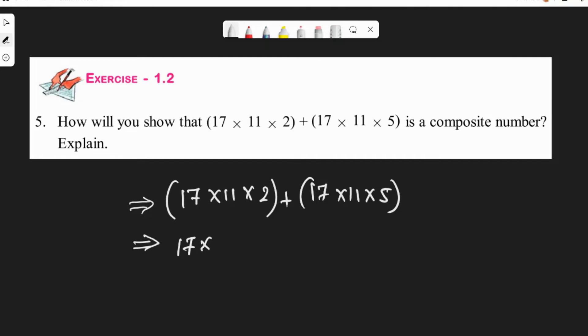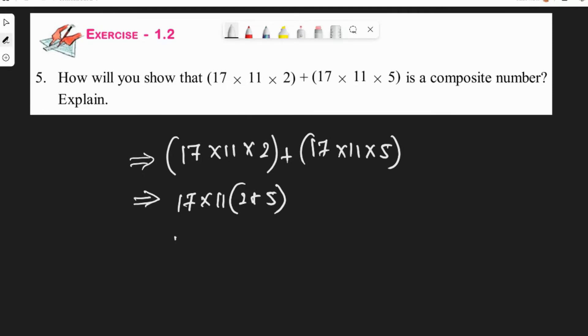We'll get 17 × 11 × (2 + 5), which equals 17 × 11 × 7.